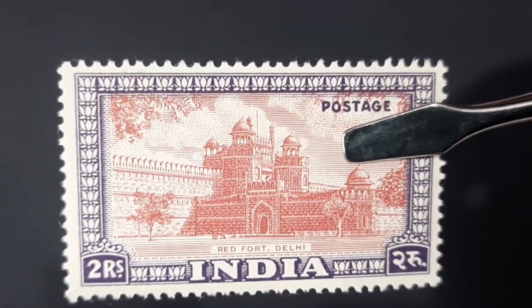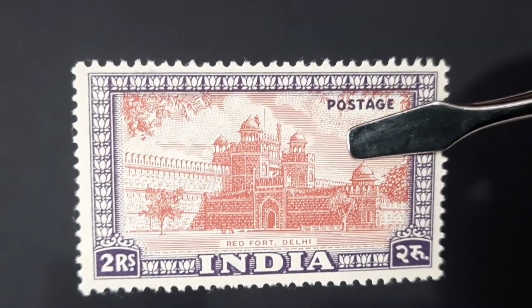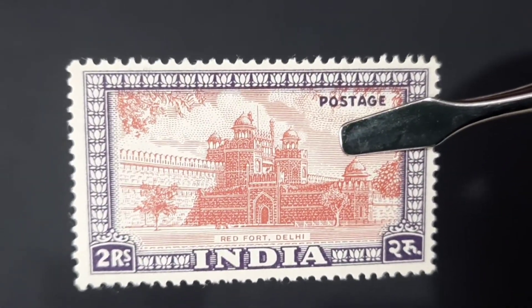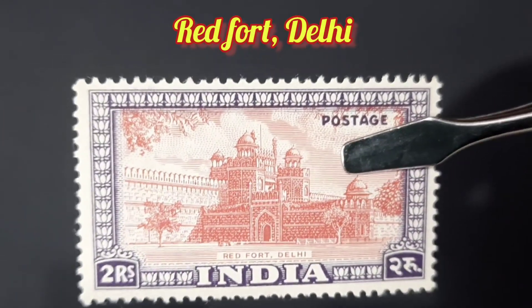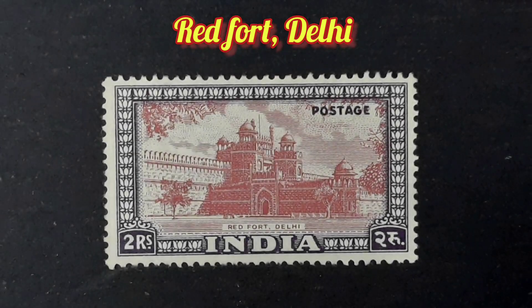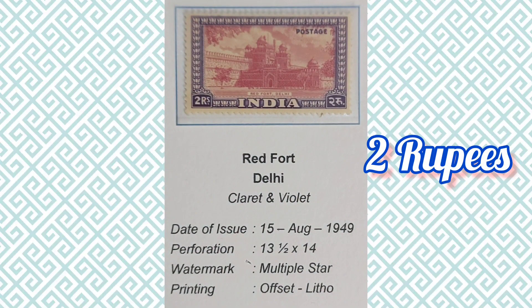The next stamp is the two rupee stamp. The image depicted here is the Lal Qila or the Red Fort, a historic fort in Old Delhi built by the Mughal emperor Shah Jahan in the 17th century when he decided to shift the capital from Agra to Delhi. The philatelic information about this stamp is provided here.